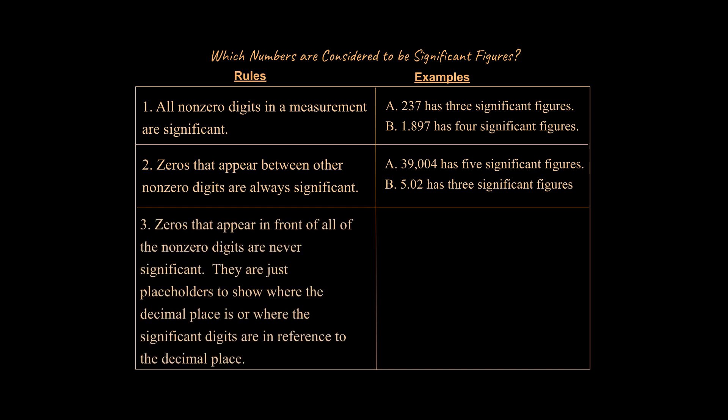Next, zeros that appear in front of all the non-zero digits are never significant. They are just placeholders to show where the decimal place is or where the significant figures are in reference to the decimal place. All right, so what do we mean by this? Take a moment to imagine what this would show.